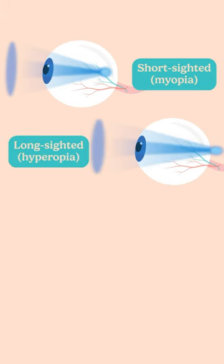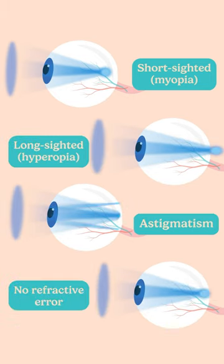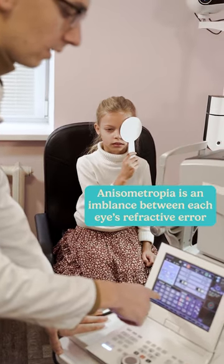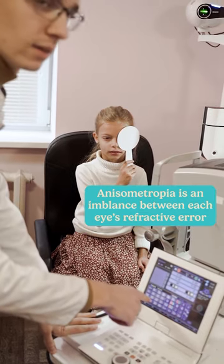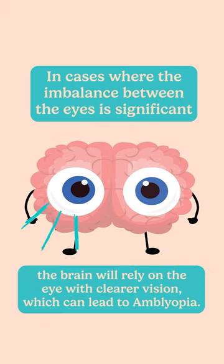Short-sightedness, long-sightedness, and astigmatisms are all refractive errors that can cause blurry or distorted vision. If there's an imbalance between each eye's refractive error, this is called anisometropia. In cases where the imbalance is significant, the brain will rely on the eye with clearer vision, which can lead to amblyopia.